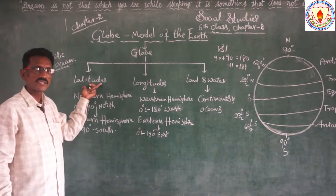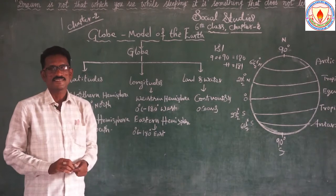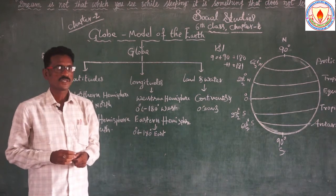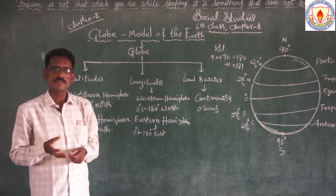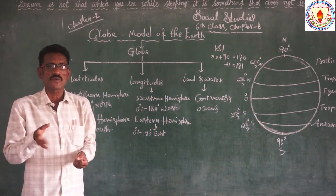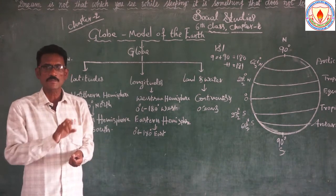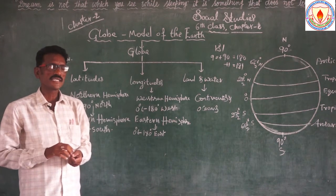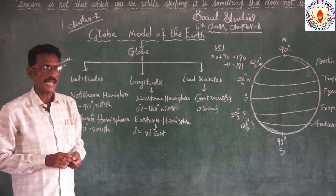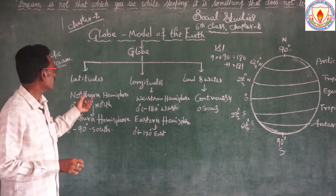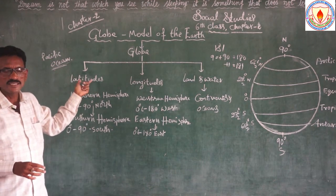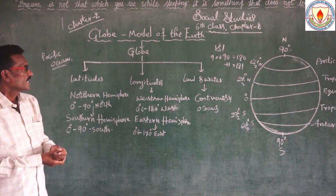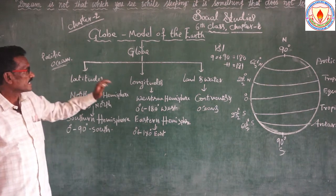Latitudes are imaginary lines which are drawn on the globe horizontally. When we are seeing on the map, with the help of latitudes we are able to find out a particular place — India, Andhra Pradesh, Japan, America — any place we are able to find out on the map. I hope you are understanding. Latitudes are imaginary lines. Next one is the longitudes.